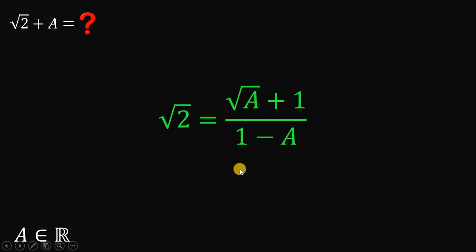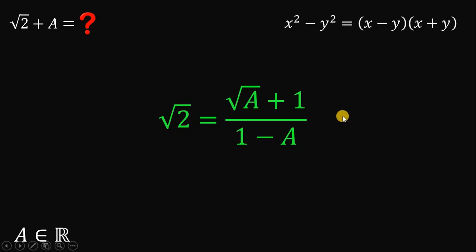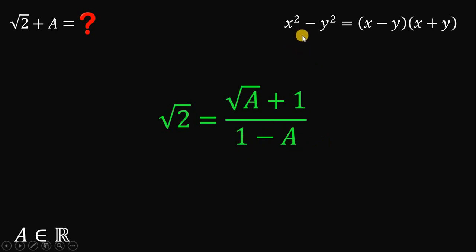Take note of the denominator 1 minus a. Whenever we see subtraction, it reminds us of the difference of two squares. If we have x squared minus y squared, it is equivalent to x minus y multiplied by x plus y. So how are we going to convert this 1 minus a into something that is a square minus another square?